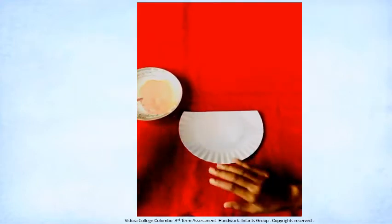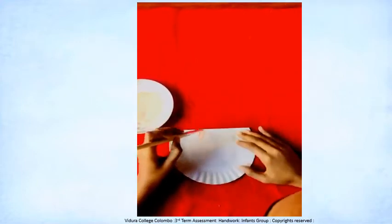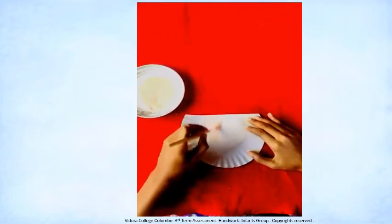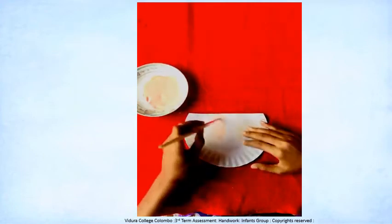Then color the inside circle of the paper plate using skin tone paint and keep it aside to dry.